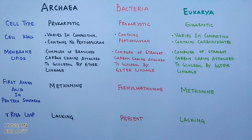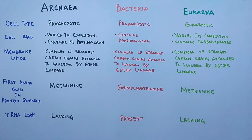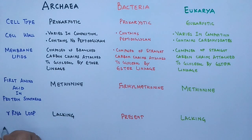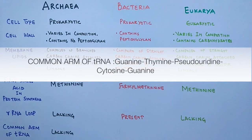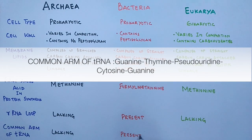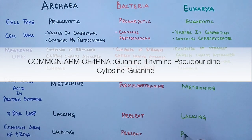So the rRNA loop is only present in Bacteria. Now looking at structural differences in tRNA: the common form of tRNA is lacking in Archaea, while it is present in both Bacteria and Eukarya.